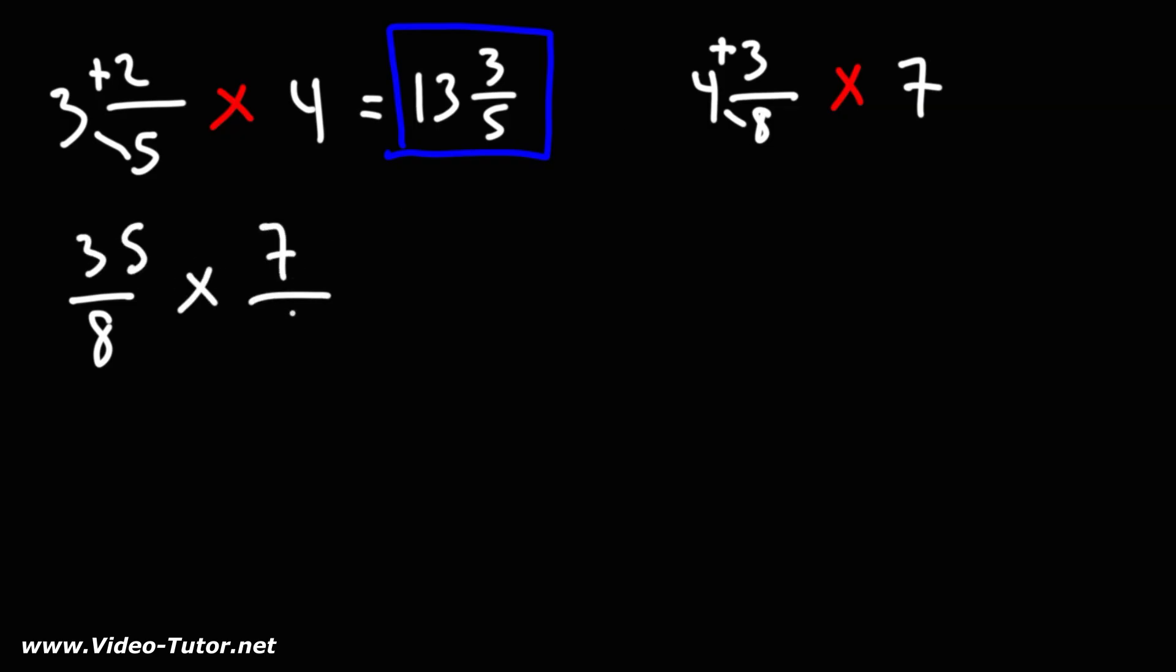And the whole number, 7, we'll write it as 7 over 1. So we have 35 times 7. 30 times 7 is 210, because 3 times 7 is 21. And 5 times 7 is 35, so 210 plus 35, that's 245. So we have 245 over 8.